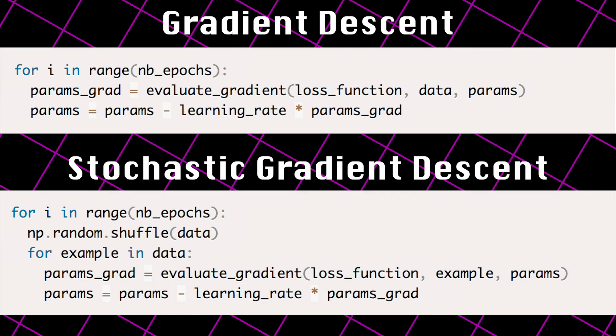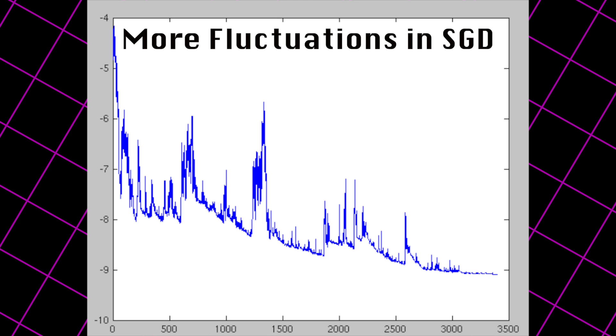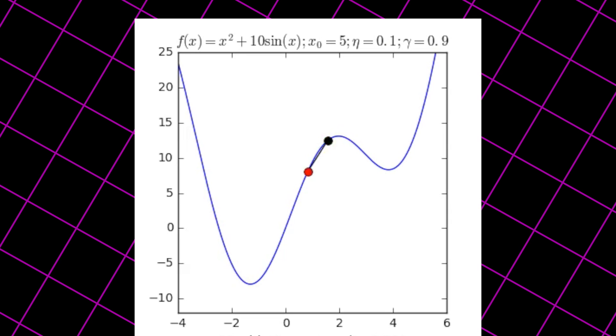This is where we perform a parameter update for each training example and label. So we just add a loop over our training data points and calculate the gradient with regard to each and every one. These more frequent updates with high variance cause the objective function to fluctuate more intensely. This is a good thing in that it helps it jump to new and possibly better local minima, whereas standard gradient descent will only converge to the minimum of the basin that the parameters are placed in. But it also complicates convergence to the exact minimum since it could keep overshooting.